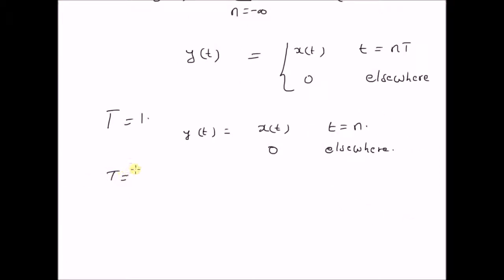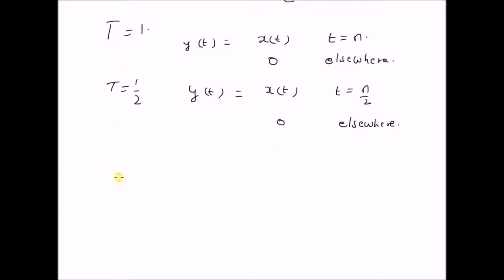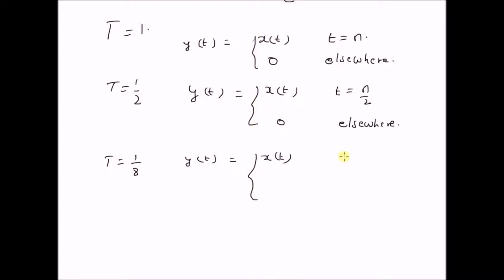Similarly, for T = 1/2, y(t) will be equal to x(t) at t = n/2 and 0 elsewhere. And we follow the same process for different values of the interval T. For example, T = 1/8, y(t) will be equal to x(t) only when t = n/8, otherwise it is 0.